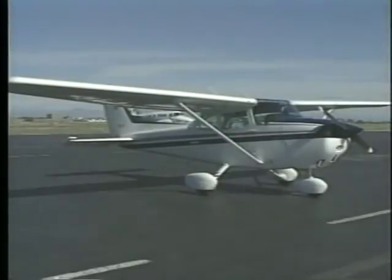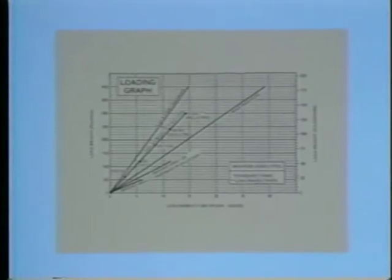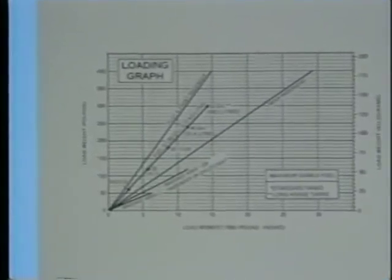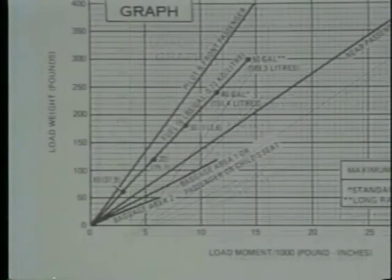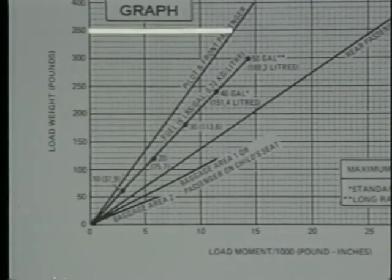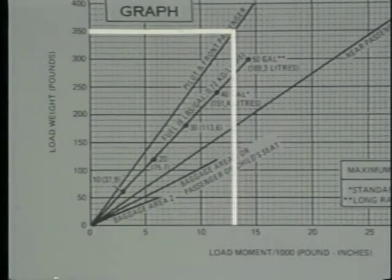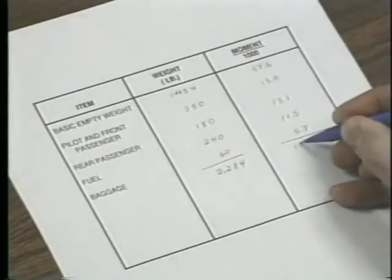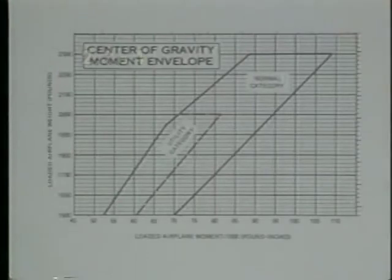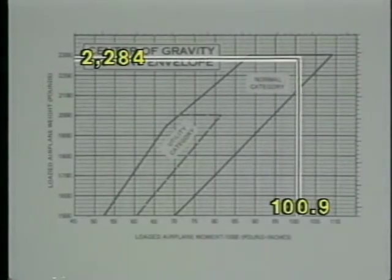Some aircraft manufacturers use the graph method, which is a simplification of the computational method. It allows you to determine the moment of each item without having to multiply each weight by its arm. In this example, assume this airplane is carrying the same load as before. To find the moment for yourself and your front passenger, enter the graph from the left side at 350 pounds, then drop straight down and read the moment divided by 1,000. In this case it is 13.0. Enter this moment in the appropriate space in the worksheet, then follow the same procedure for the remaining items. Notice that with this type of graph, you don't have to do any calculations to determine the center of gravity.